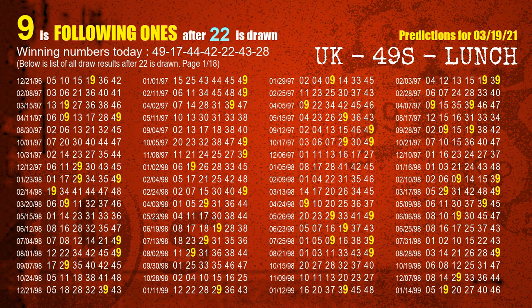The fifth winning number is 22. The most frequently following units digit is 9 when 22 is the winning number in the last draw.